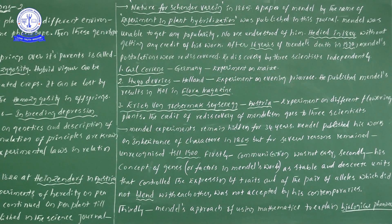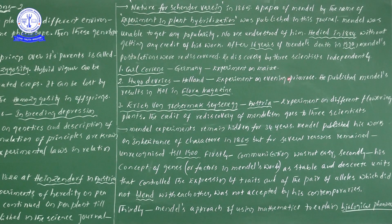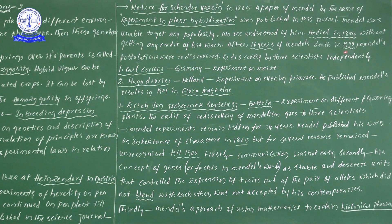That is why Mendel's experiments remained hidden for approximately 34 years with no one recognizing them. But in 1900, for the first time three scientists — Correns (Germany), de Vries (Holland), and Tschermak (Austria) — rediscovered Mendelian experiments. Correns worked on maize, de Vries on evening primrose, and Tschermak on different flowering plants.